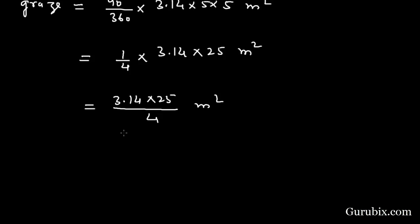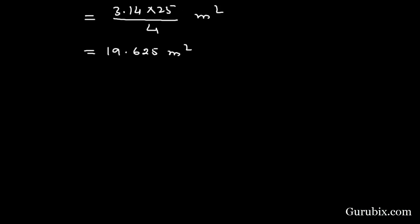And this equals 19.625 meter square. In case second, the radius is increased by 5 meter, then it becomes 10 meter. Theta is still same, 90 degree.